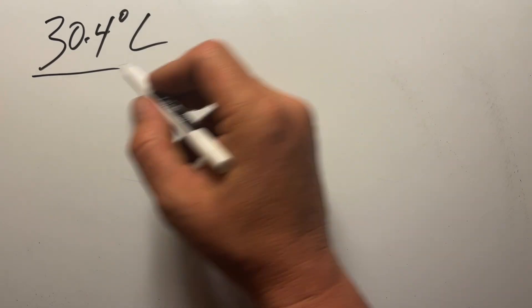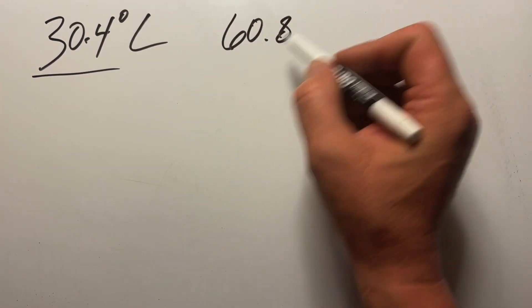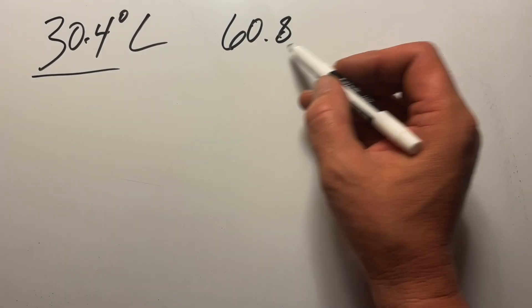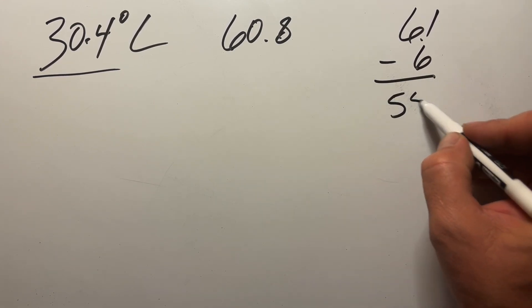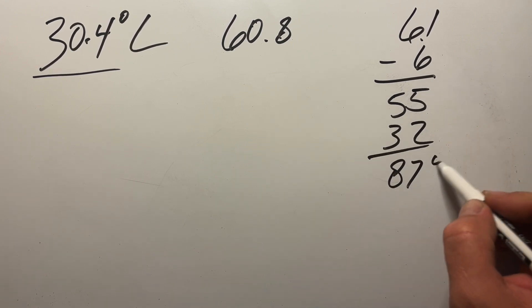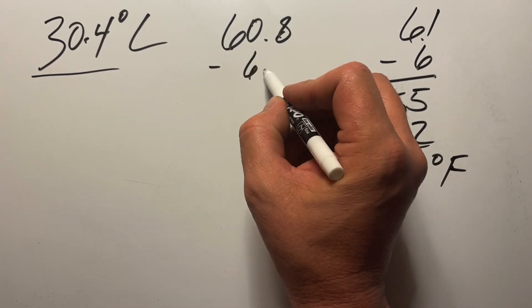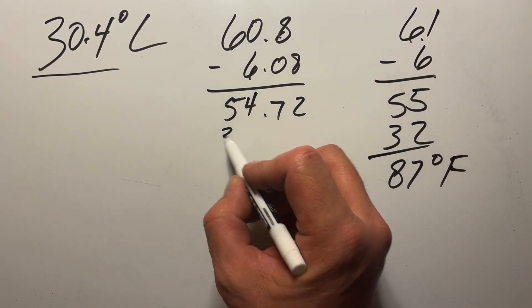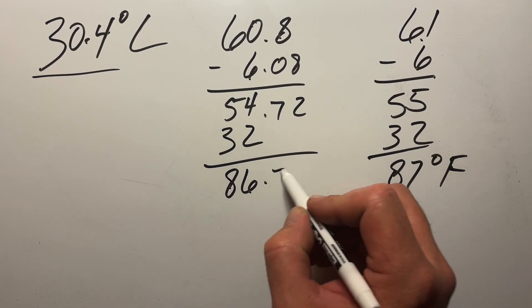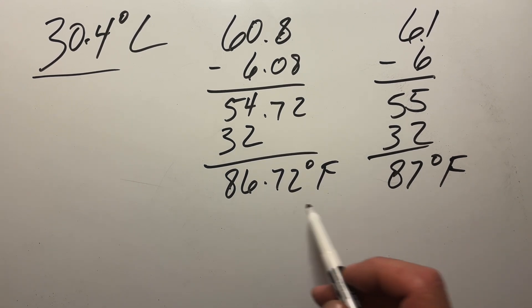Now we're going to do a conversion where the degree Celsius starts as a decimal number. We'll do both the estimation and the accurate version. Double 30.4 — that becomes 60.8. For the estimation, round 60.8 up to 61, move one decimal place to get 6.1, round down to 6. So 61 minus 6 is 55, add 32 — that's 87 degrees Fahrenheit. For the accurate version: 60.8 minus 6.08 gives 54.72, add 32 — that's 86.72 degrees Fahrenheit. Our estimation is within 0.28 degrees of the actual conversion.